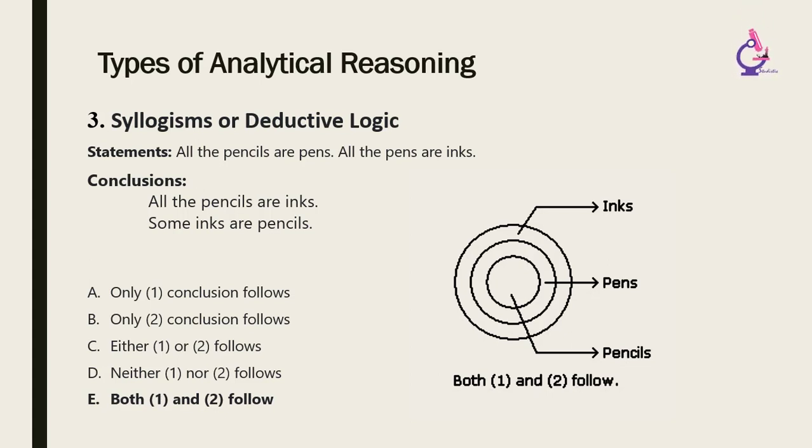An example of a syllogism is: all mammals are animals. All elephants are mammals. Therefore, all elephants are animals.